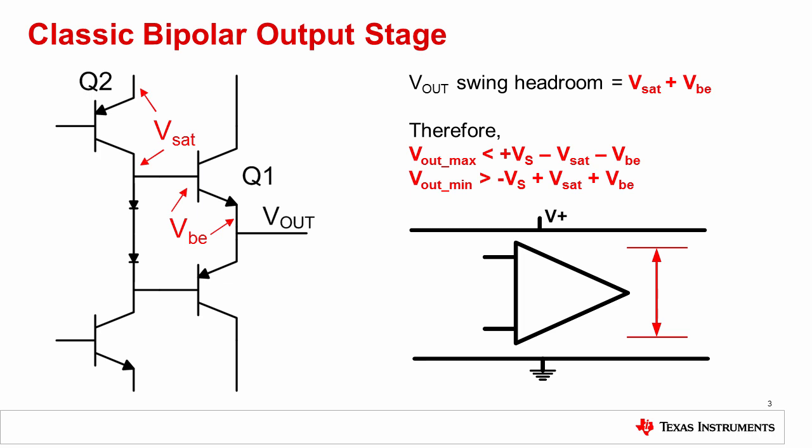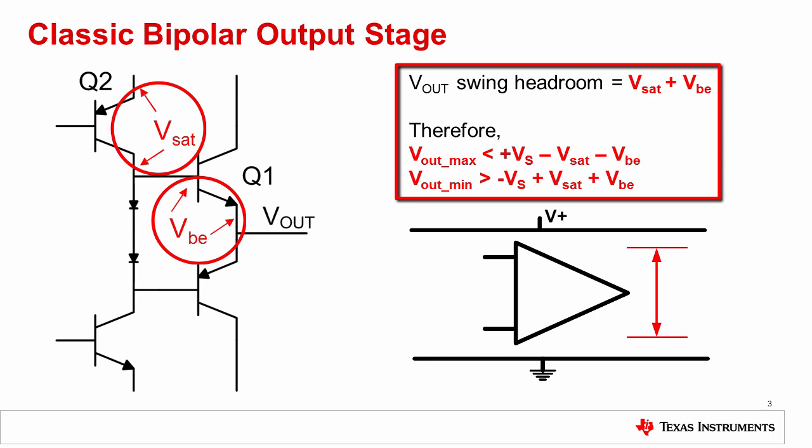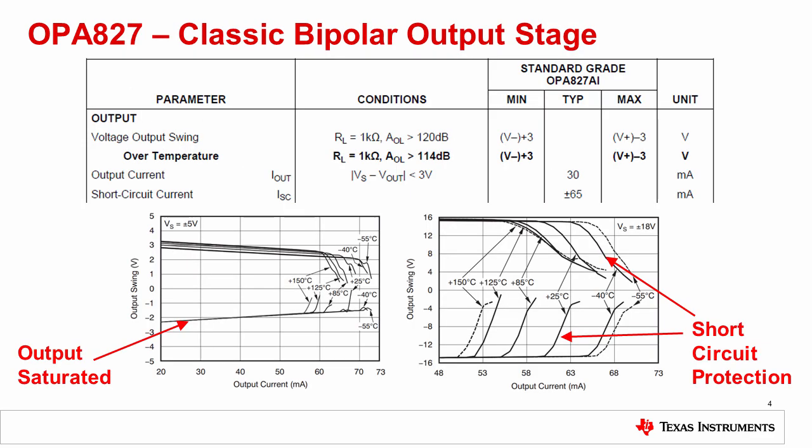The main disadvantage of this output stage is that the output swing is limited by the VBE and saturation voltages of the output transistors. This output limit can be a volt or more depending on how the circuit is implemented. Looking closely at the specifications for the OPA827, an amplifier with a classic bipolar output stage, we see that the output swing is several volts away from each rail. Notice that the specifications for this device define the output swing for a specified load resistance of 1K ohm and an AOL of 120 dB and greater. The AOL test condition is included to show that the output can swing linearly within the range of 3 volts from the supply rails. It is very important to note that some output swing specifications may be what is known as a SLAM limit. A SLAM limit is the maximum output voltage the amplifier can provide, but the output is saturated and will show nonlinear behavior.